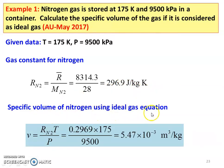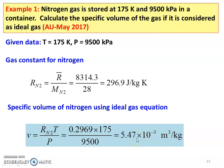The specific volume of nitrogen using the ideal gas equation: small v equals R_N2 into T divided by P, from PV = RT, so v = RT/P. Substituting: 0.2969 into 175 divided by 9500. The answer: specific volume of nitrogen is 5.47 × 10⁻³ m³ per kilogram.